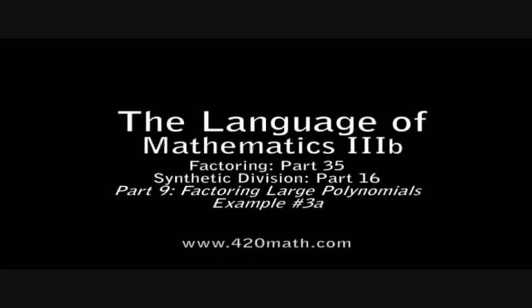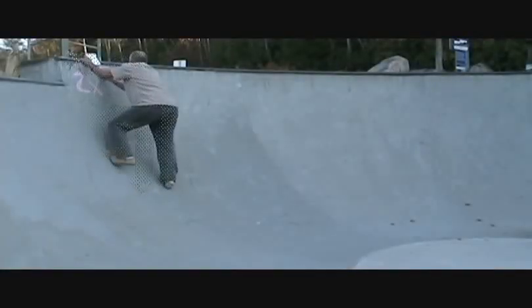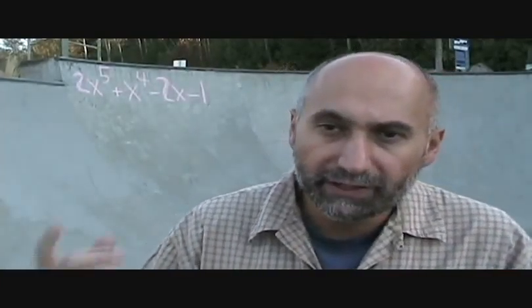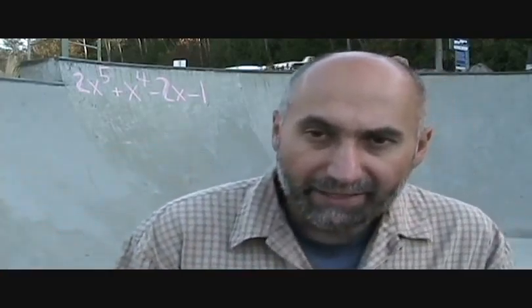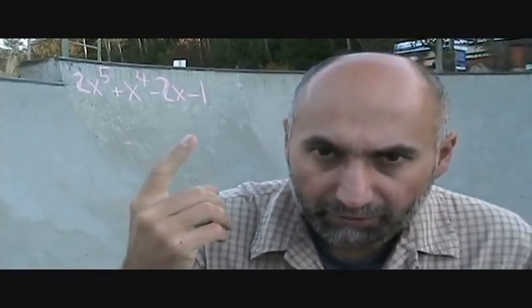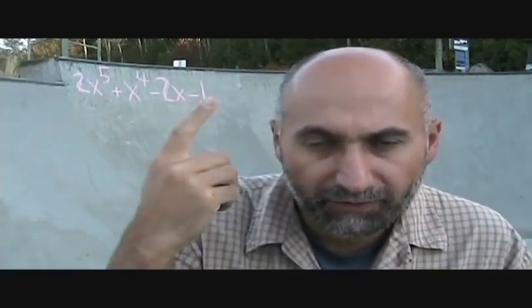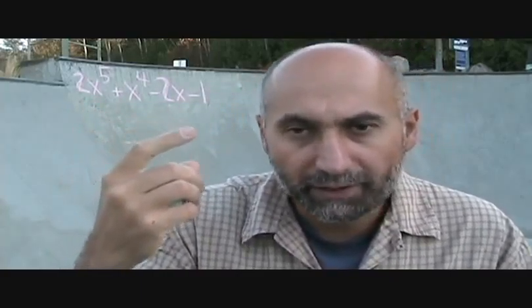The question asks us to factor the expression 2x to the power of 5 plus x to the power of 4 minus 2x minus 1. The possible factors are possible factors of 1 divided by possible factors of 2. Possible factors of 1 are plus or minus 1, and possible factors of 2 are plus or minus 1 and plus or minus 2.